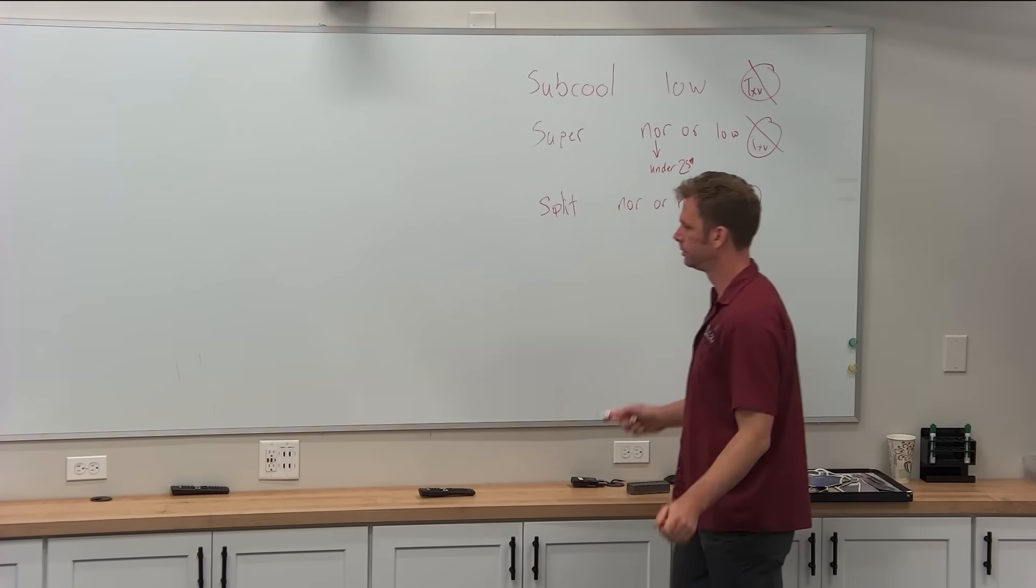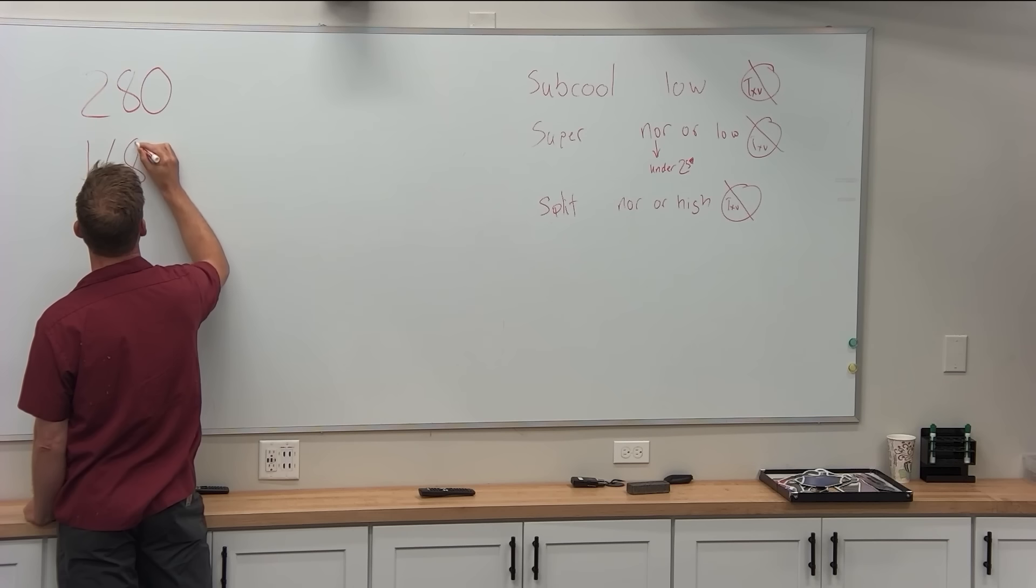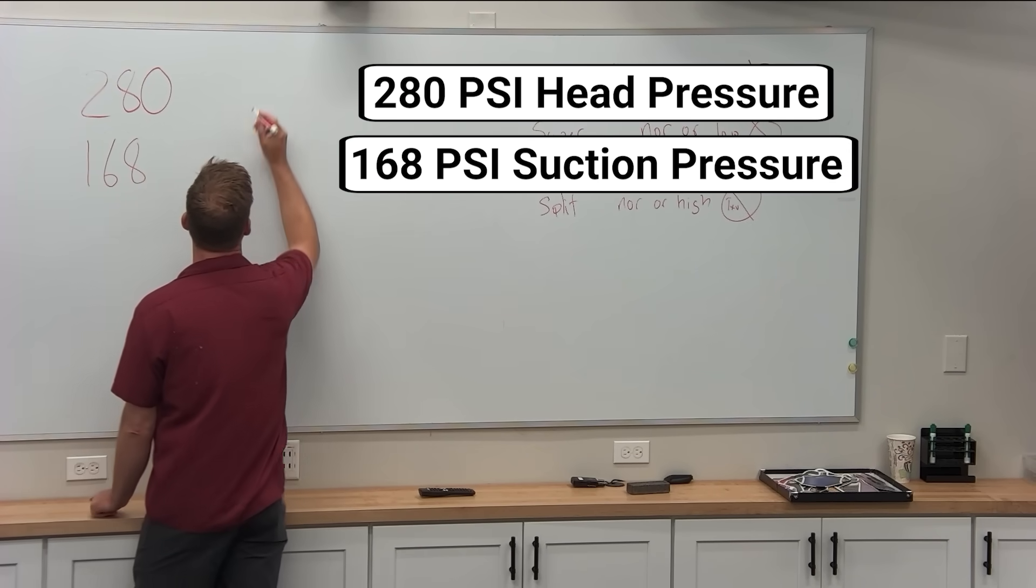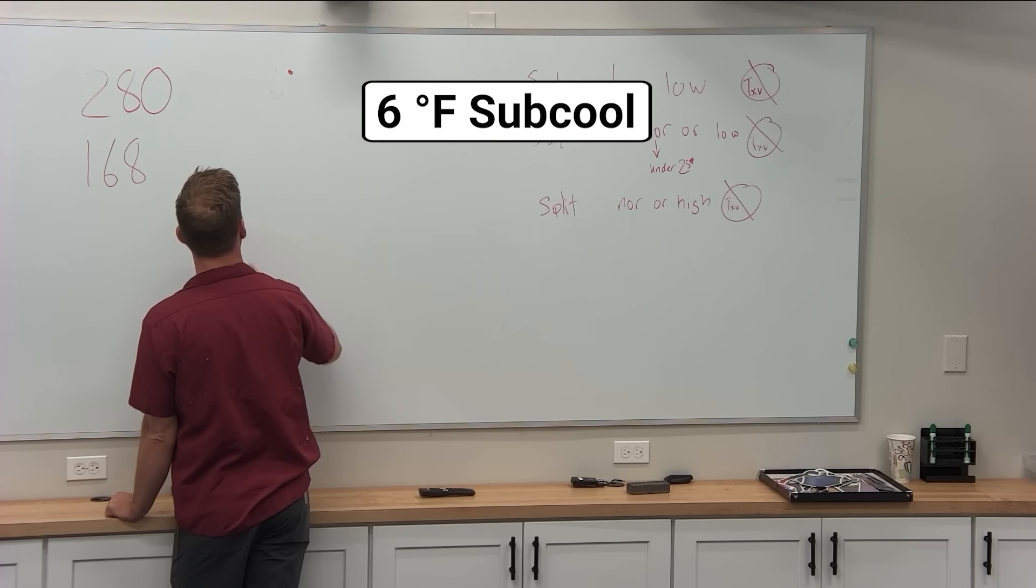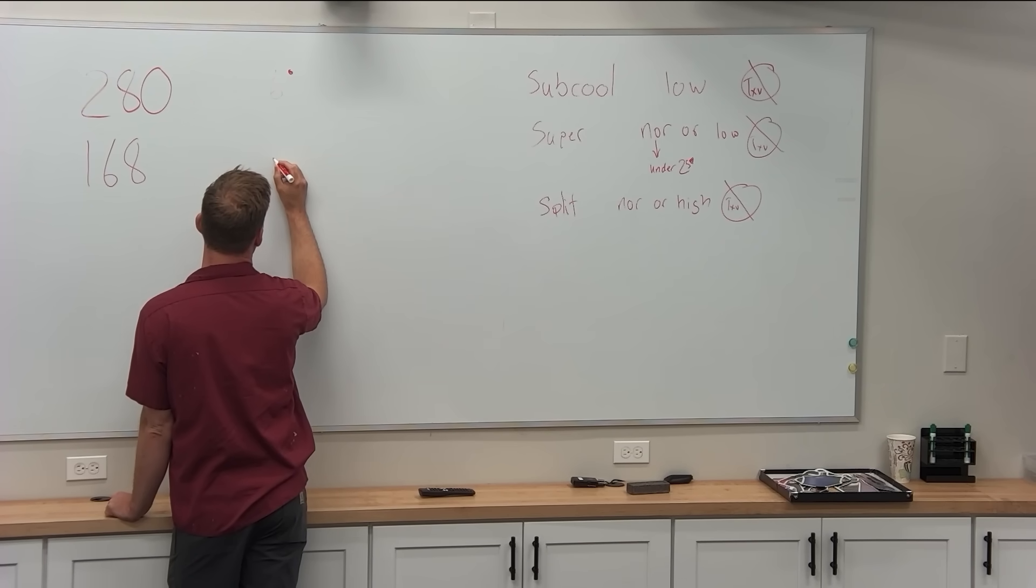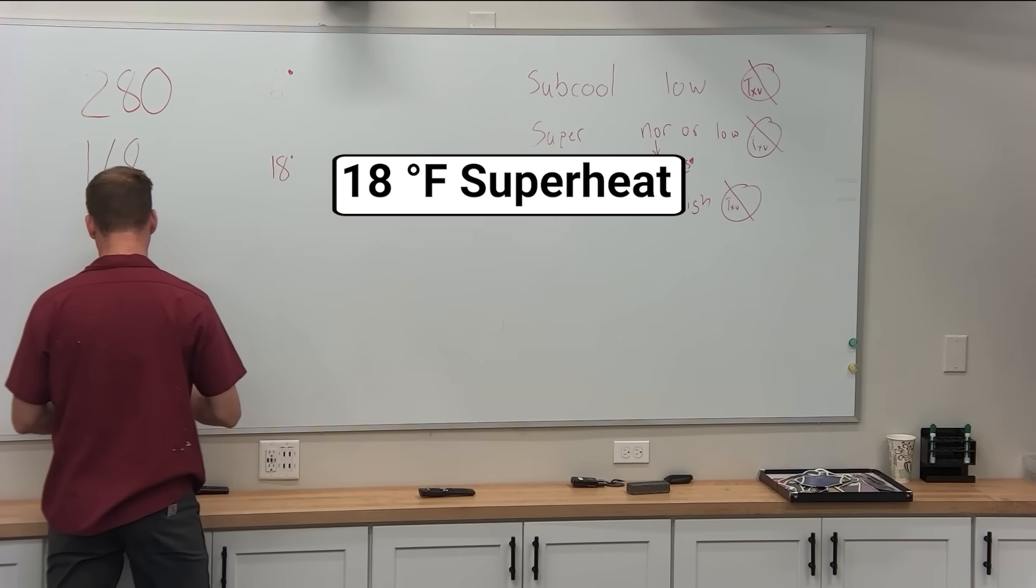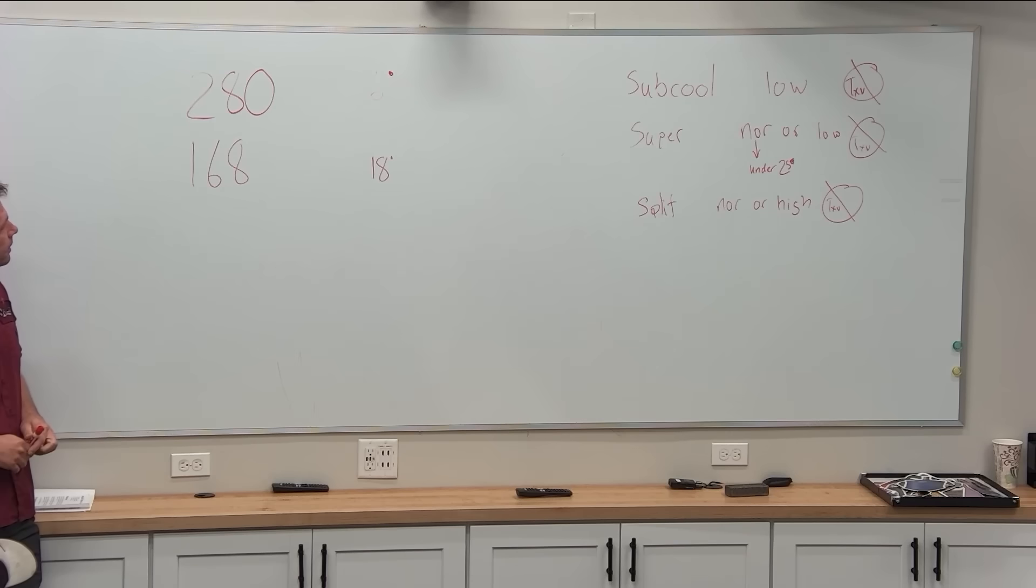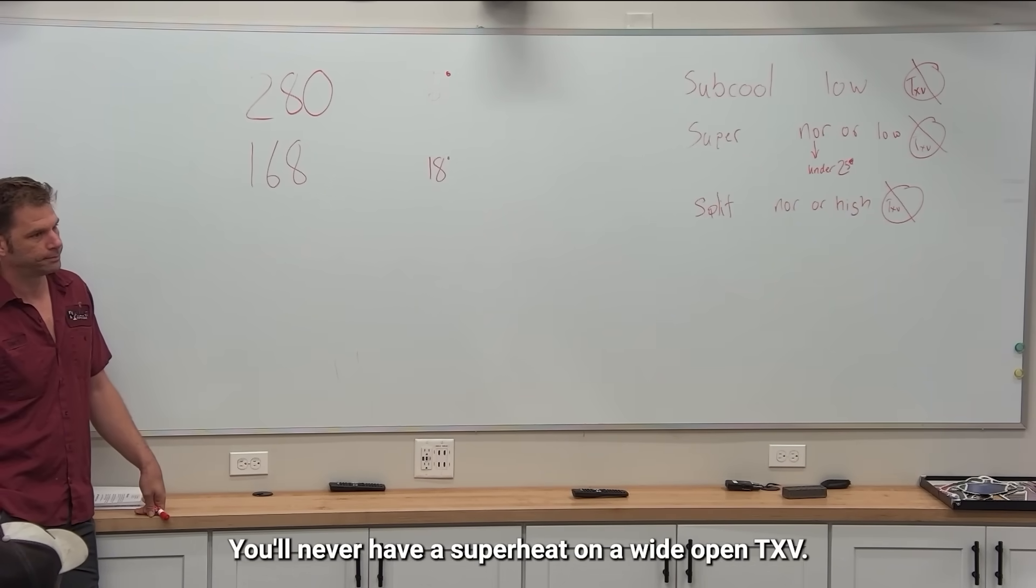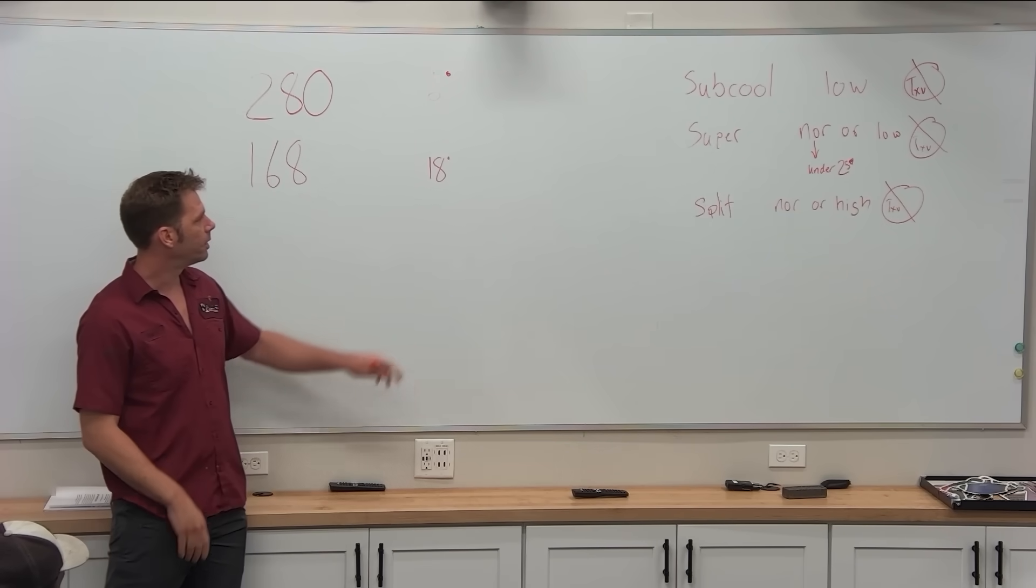As a bonus, we're going to do a TXV open scenario. I'm going to start with this though. These are our pressures. Subcool, we're going to do six and superheat we're going to do 18. Not a TXV. Austin says we don't have an overfeeding TXV. You'll never have a superheat on a wide open TXV. That's right. Exactly right. You're never going to have a superheat on a wide open TXV.